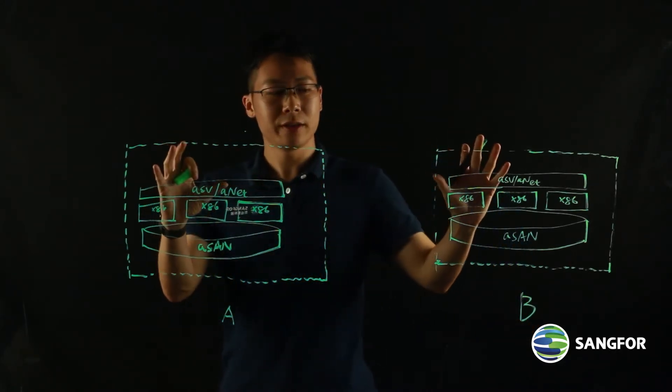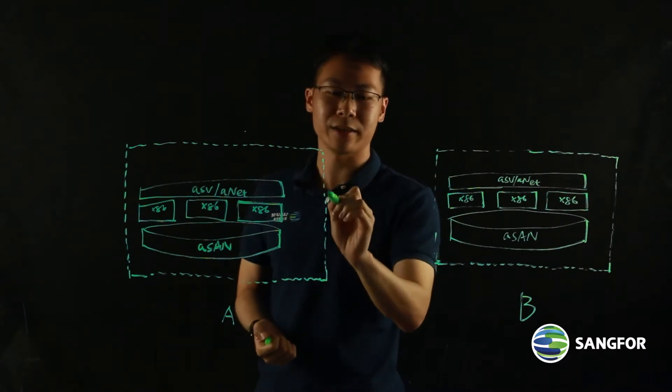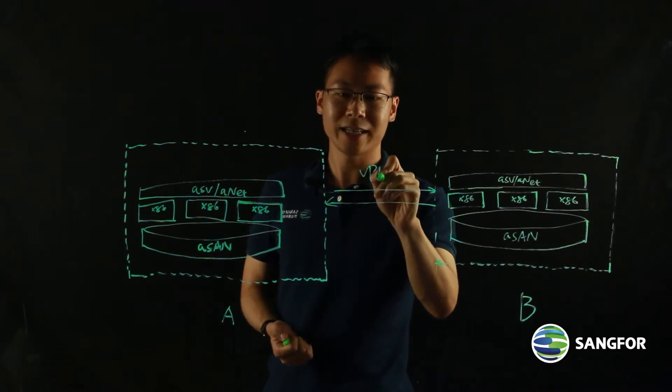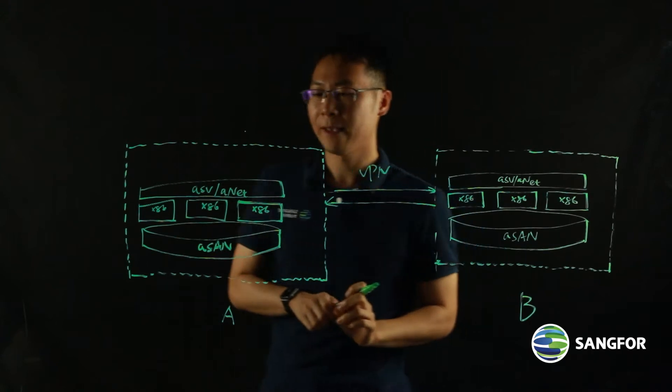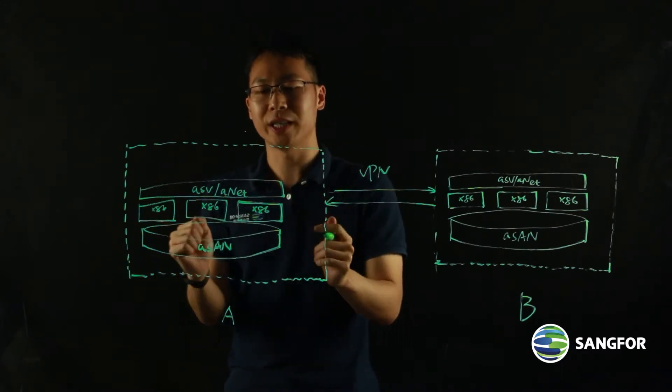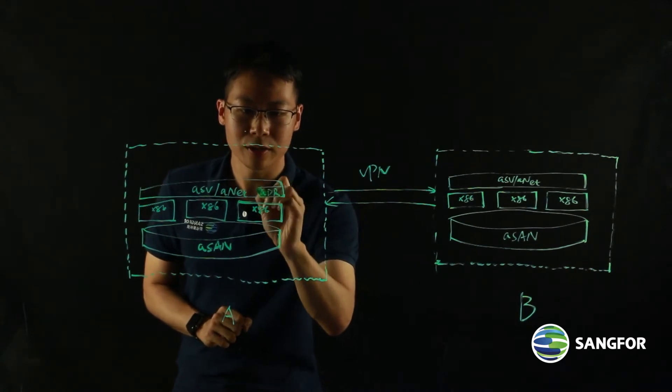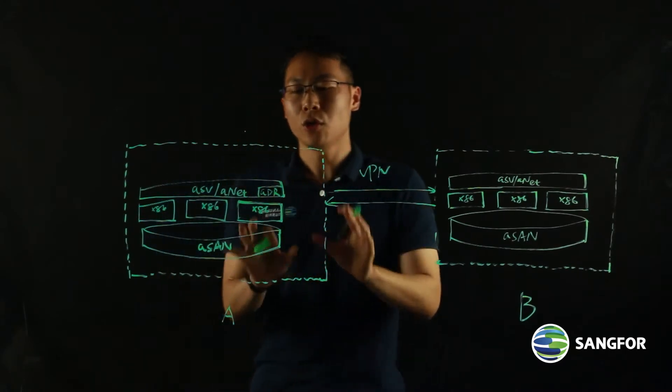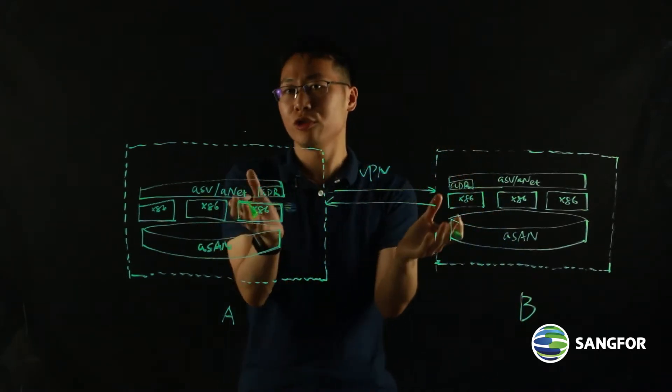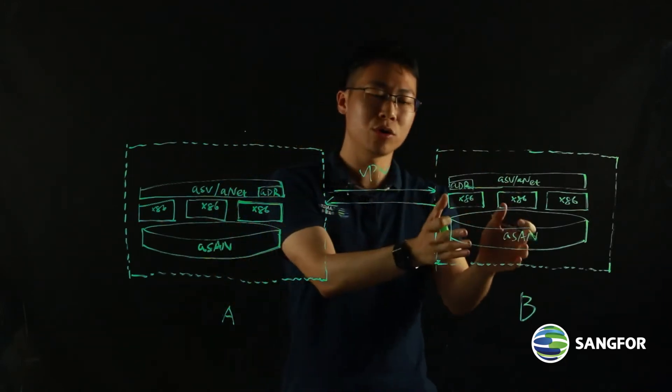If I deploy a disaster recovery solution on the two sites, first of course, these two sites need to be connected. Let's say they are connected by a VPN dedicated line between the two sites. And I need to activate my disaster recovery license on the HCI. We have an ADR module that is deeply integrated in the kernel of our platform. With ADR enabled at the two sites, they communicate with each other and the data will be transferred from the module at site A to the module at site B.